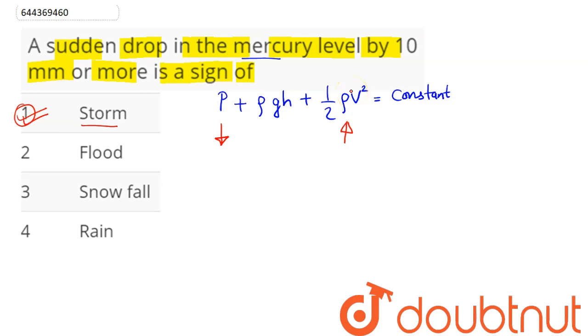This leads to the prediction of storm because pressure decreases, causing air velocity to become higher and leading to storm.